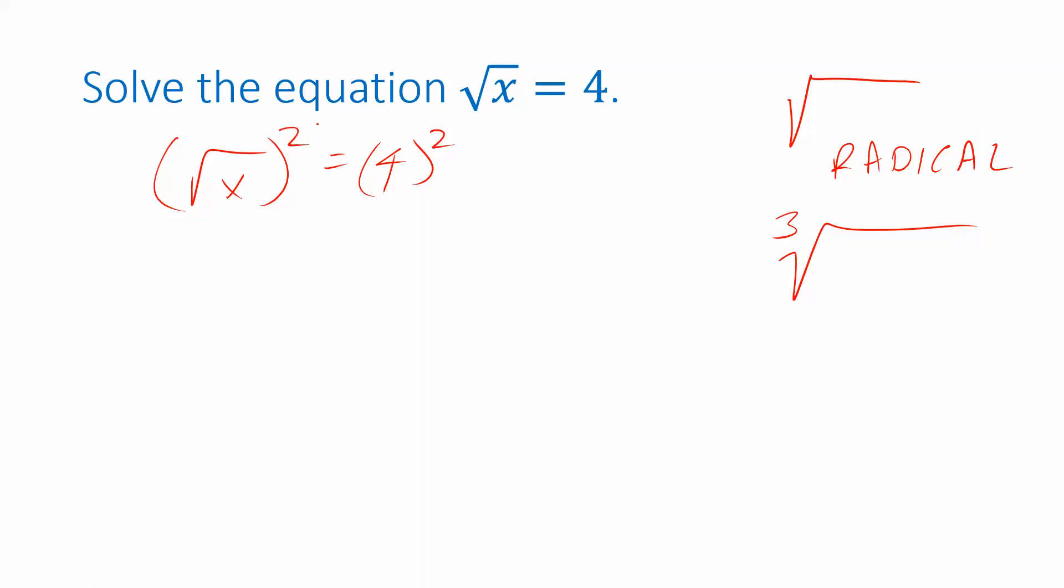So squaring undoes the square root, leaving us just an x on the left side. And on the right side, 4 squared is 16. So this was a really short question, where that's already our final answer.